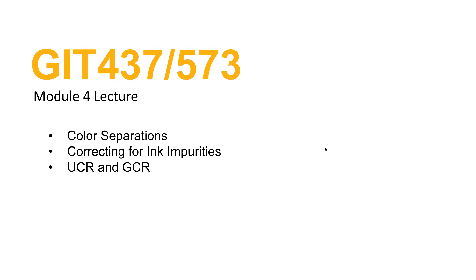Hello everyone and welcome to lecture 4. This time we're going to be talking about color separations. We'll talk about correcting for ink impurities or deficiencies in process colors, and we'll talk about some ways to fix those ink impurities or deficiencies with undercolor removal and/or gray component removal.